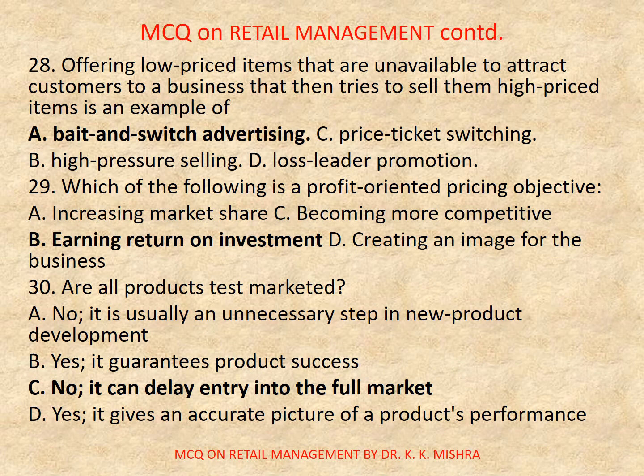Question number 28: Offering low-priced items that are unavailable to attract customers to a business that then tries to sell them high-priced items is an example of: a) bait and switch advertising, b) price ticket switching, c) high pressure selling, d) loss leader promotion. Correct option is a) bait and switch advertising.